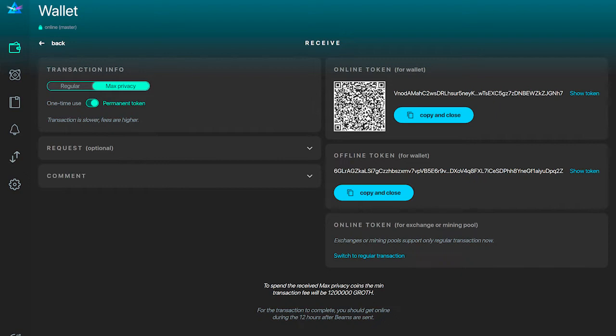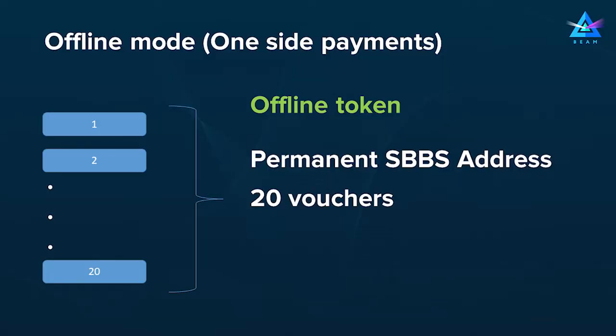This allows a sender to send funds even if the receiver is not online at the moment. Unlike Bitcoin, which always uses the same address to receive funds, in BIM, due to the way this is implemented via Lelantus, it requires the sender to receive a set of vouchers encoded in the offline token, and each voucher is used for one offline payment. By default, whenever you create an offline token, there are 20 vouchers encoded in it, which allows the sender to perform 20 offline payments.